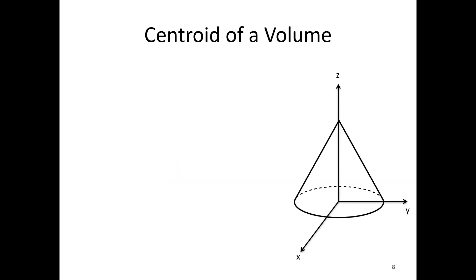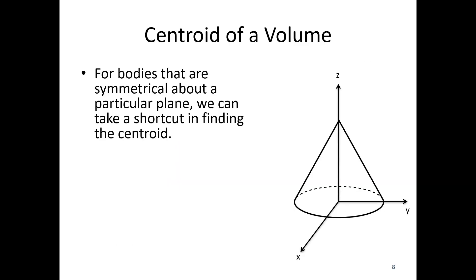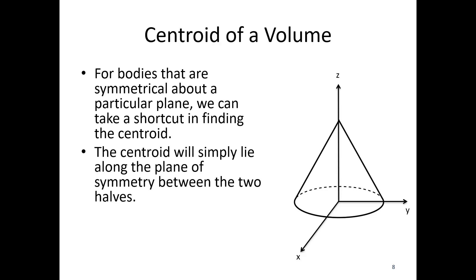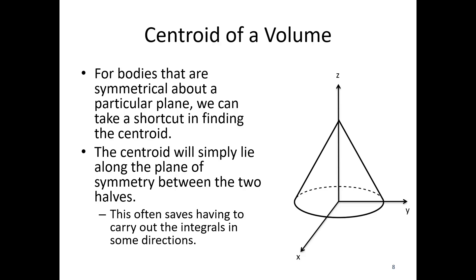For bodies that are symmetrical about a particular axis, we can take a shortcut. The centroid is simply going to lie along any plane of symmetry. So here, we don't have to carry out all the integrals — we can be smart and only do as much integration as we need to.